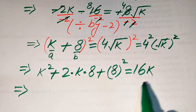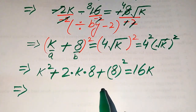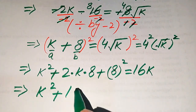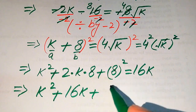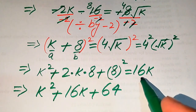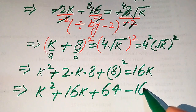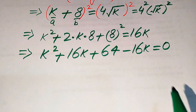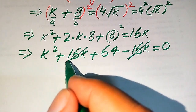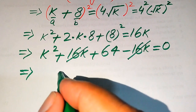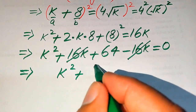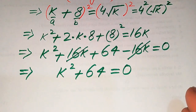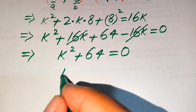Moving 16k to the left hand side: k squared plus 16k plus 64 minus 16k equals 0. The positive 16k and negative 16k cancel each other, leaving k squared plus 64 equals 0.